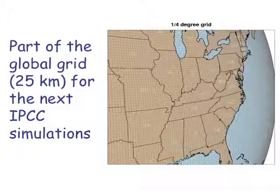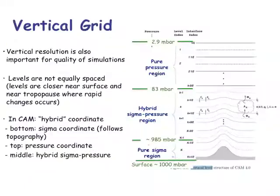Resolution doesn't solve everything, but it does help in representing the true geographical nature of the world. In the vertical, we typically have a grid system with a terrain-following transformed grid, so it represents the shape of the mountains. As we go up to higher levels it switches over to pressure surfaces, and this allows us to put stratospheric processes into our model in a more realistic way, and it seems to work fairly well.